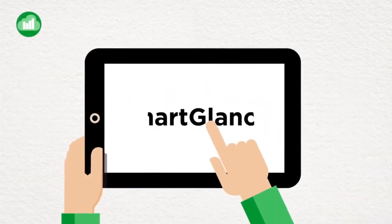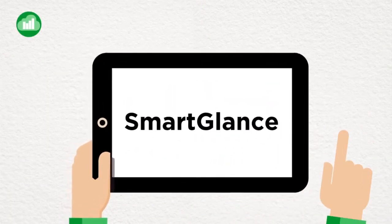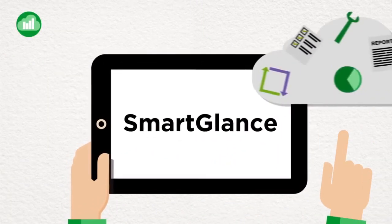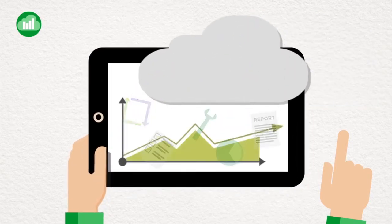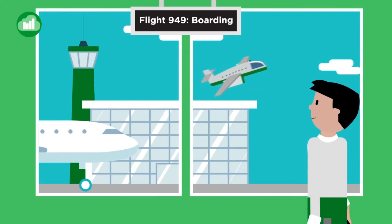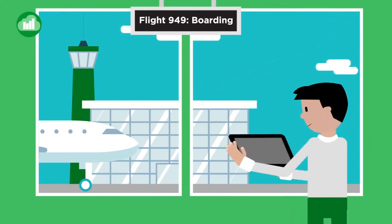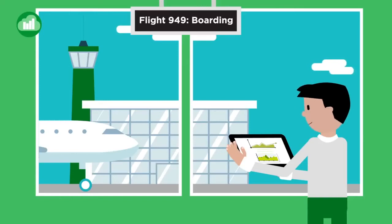Tap in with SmartGlance and leverage two of today's hottest technologies: cloud computing and mobile devices. SmartGlance draws data directly from System Platform's historian and sends reports, automatically or on demand, to subscribed smartphones and tablets. Download it today from your favorite app store.